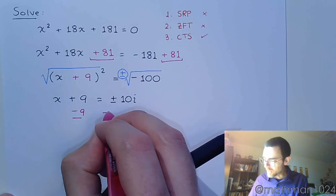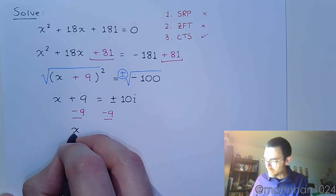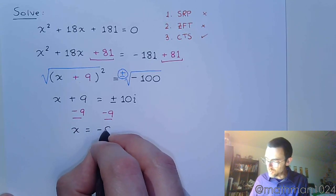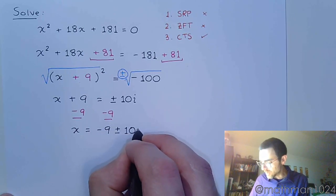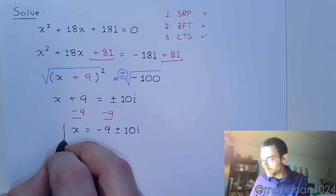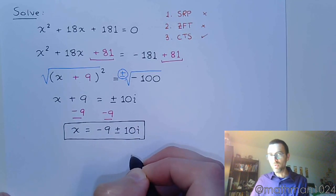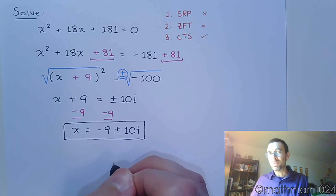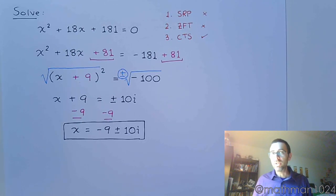One final step — subtract 9 to get x by itself: x = -9 ± 10i. Completing the square is not the only method for solving this; there is one more method that can be used. However, applying that method to this problem involves much larger numbers and is more cumbersome, though it can still be done. That method is what we'll be talking about in the next video.